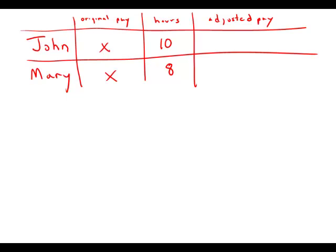So essentially we want to express X in terms of Y. Mary's adjusted pay was X minus Y after she paid John Y. And John received this payment of Y so his adjusted pay is X plus Y. And now the hourly wages are the same.